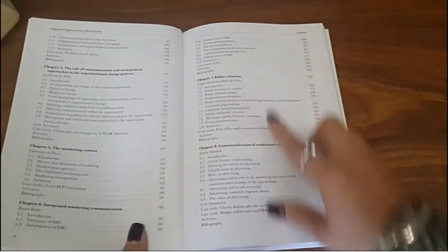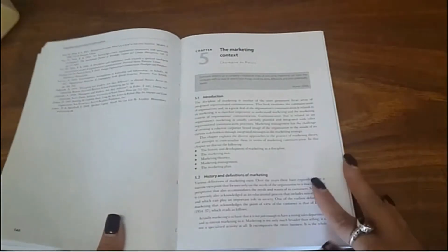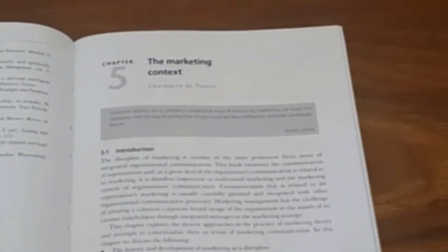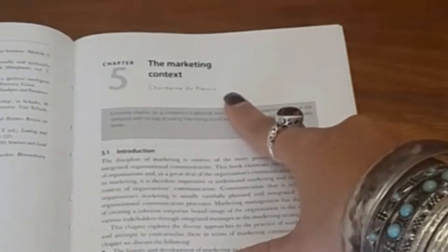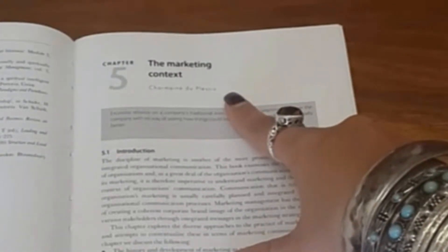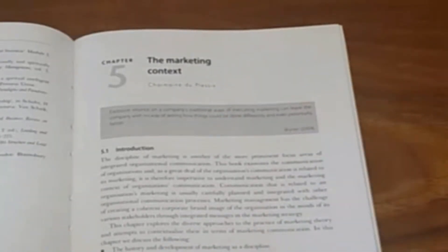Now, let's take, for example, chapter 5 specifically. As you can see, this chapter was not written by Angelopolo and Barker, the editors from the cover page of the book, but rather, Chimaine Duplessis. When referencing content from this chapter, therefore, you would have to acknowledge Duplessis as the author as well as Angelopolo and Barker as the editors.